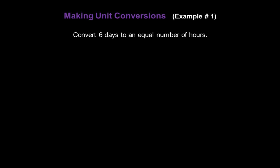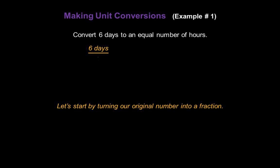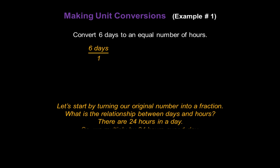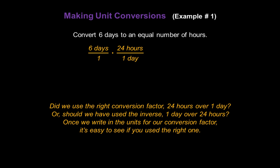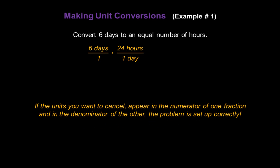Now let's convert 6 days to an equal number of hours. Again, start by turning the original number into a fraction: we have 6 days, so I'll put it over 1. What's the relationship between days and hours? Well, there are 24 hours in a day, so let's multiply by 24 hours over 1 day. Did we use the right conversion factor here — 24 hours over 1 day — or should we have used the inverse, 1 day over 24 hours? Once we write in the units for our conversion factor, it's easy to see if you've used the right one. The units days will cancel in the numerator and denominator, and we're now left with our desired units of hours.